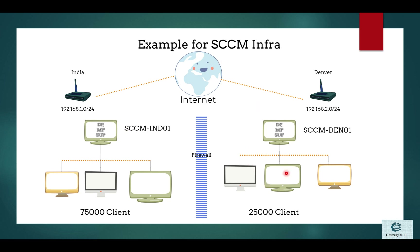Similarly, for Denver, SCCM-DEN01 is my resource. I create a boundary group for the Denver site, add the relevant site systems under the References section, and then the client can communicate only to the Denver site. With boundary groups properly configured, India clients won't cross the WAN to Denver and Denver clients won't come to India for content or policies.